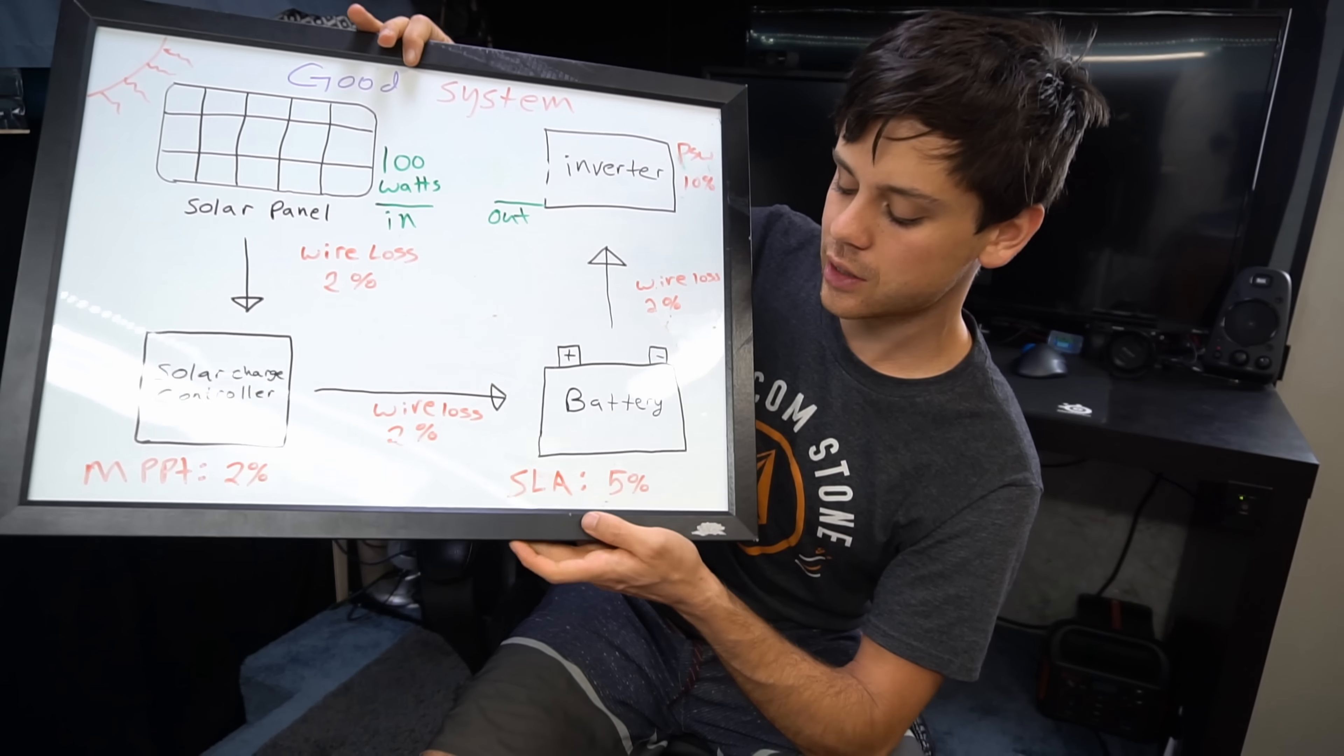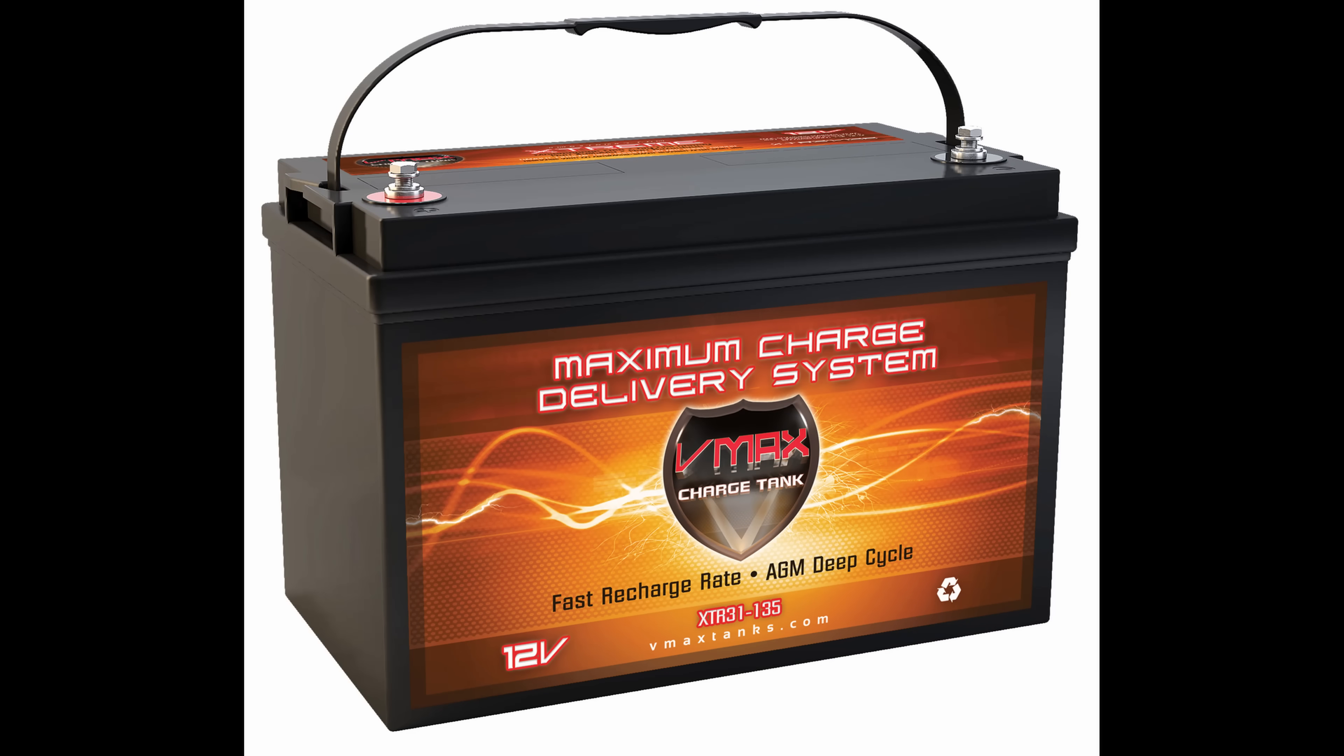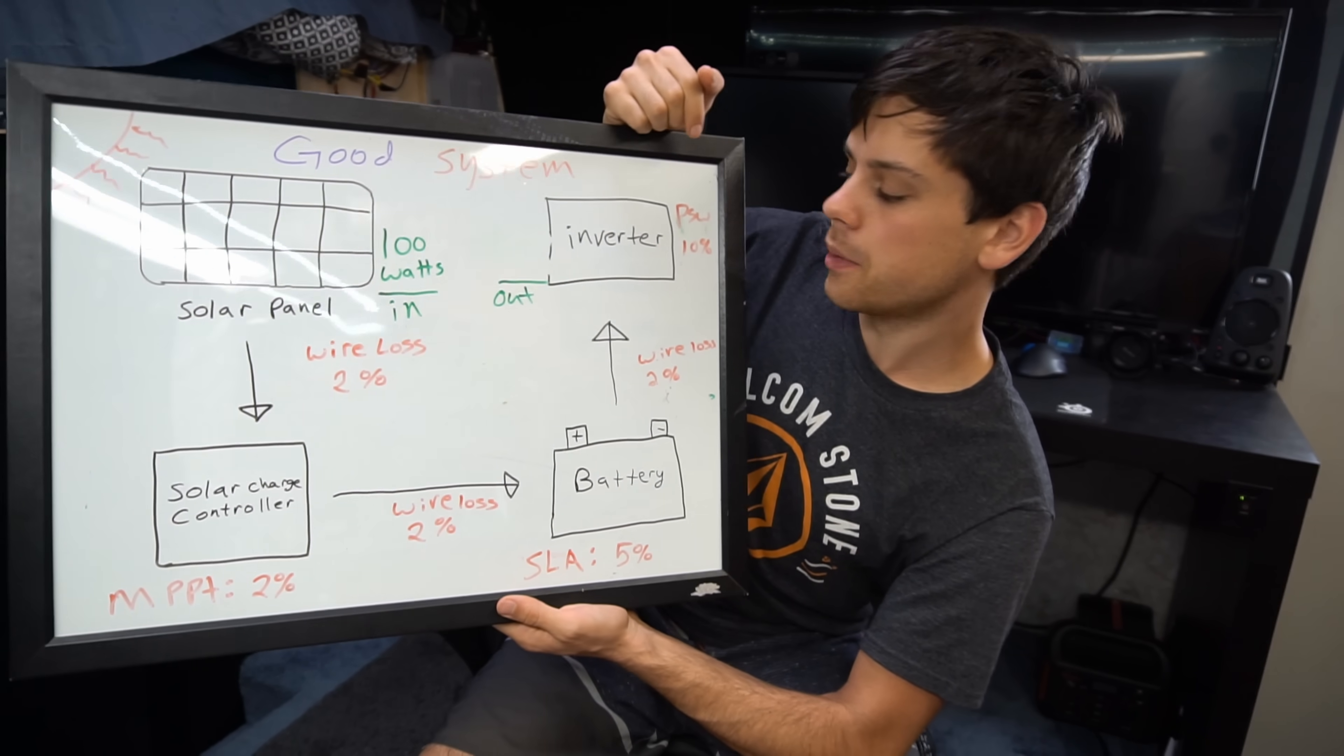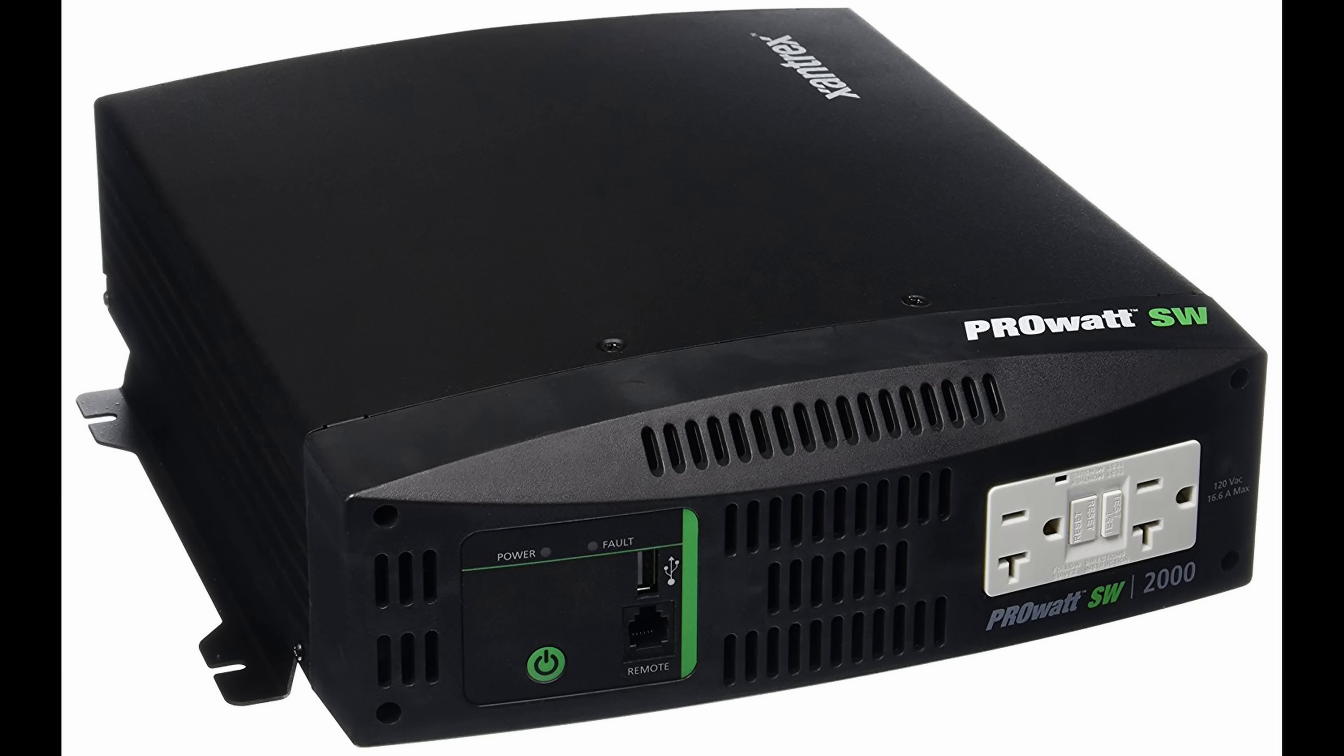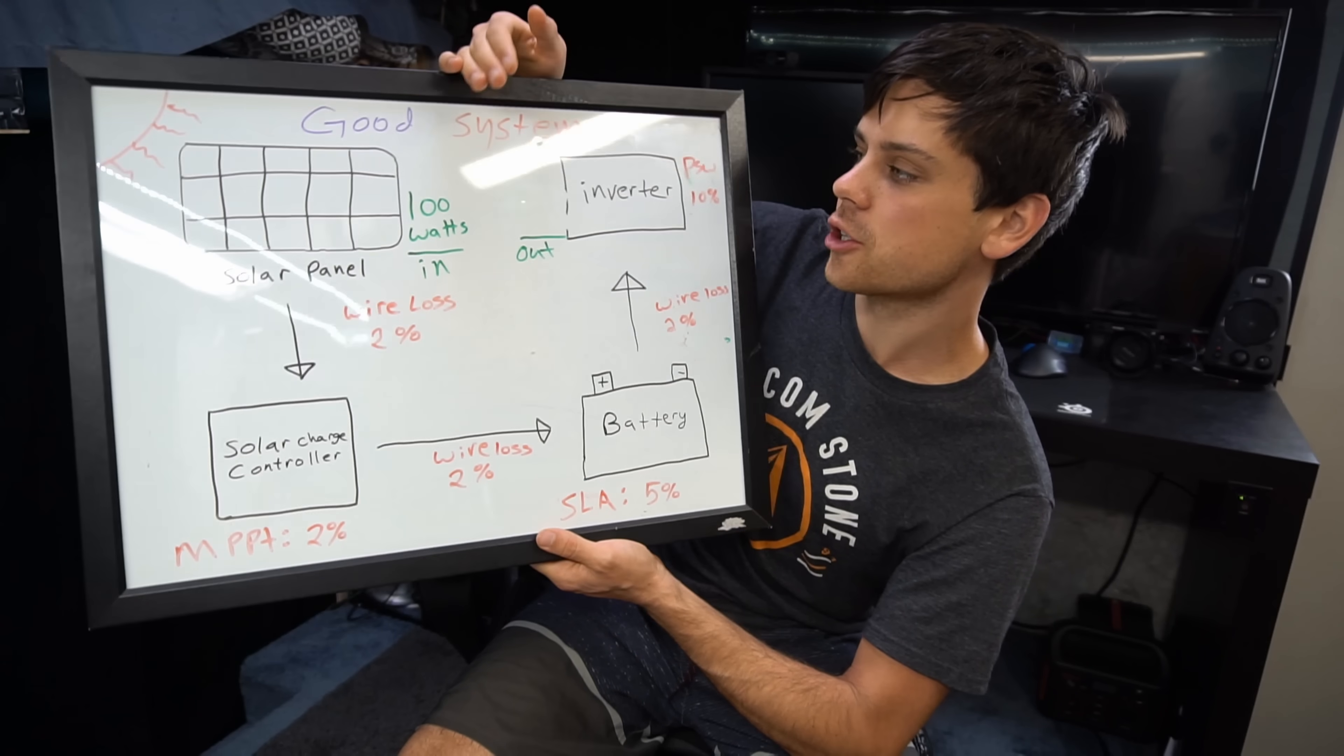And then the battery we're going to use a sealed lead acid or a valve regulated recombinant system and that's common and that's the only lead acid that I sell on my website. That's going to have only a 5 percent loss and then for the inverter we're going to use a pure sine wave inverter and that's only 10 percent loss and then 2 percent and 2 percent wire loss. So let's calculate this out and see how much better this is.